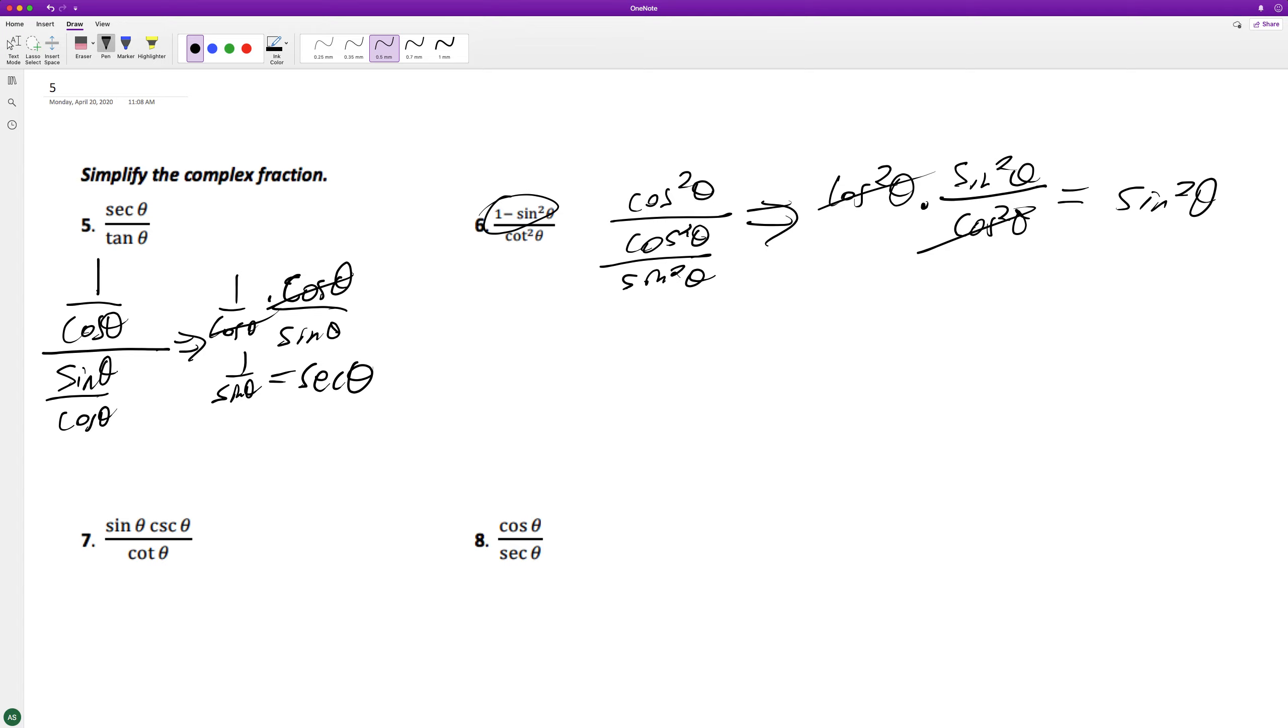And then here, break this down to sine of theta over, and then cosecant, same thing as 1 over sine theta. Cancel out cotangent theta. And the reciprocal of cotangent's tangent.